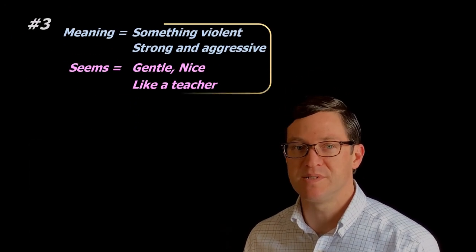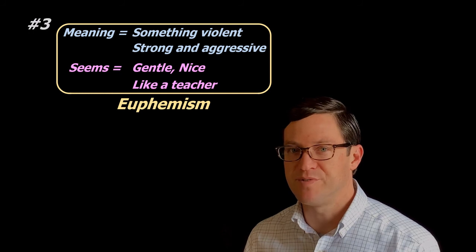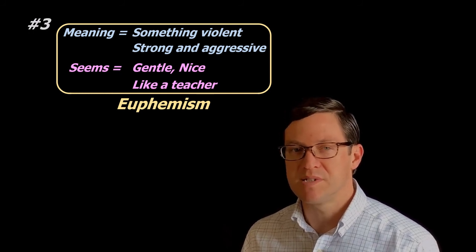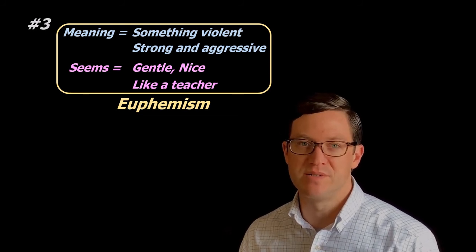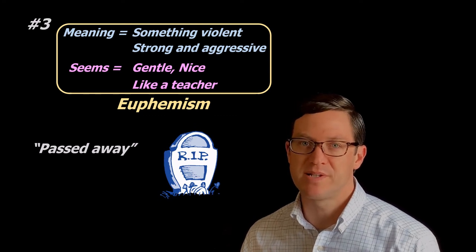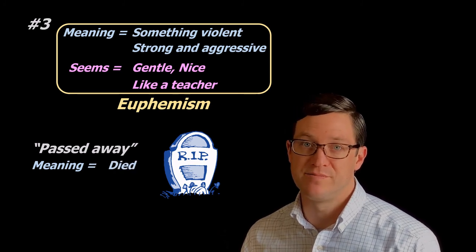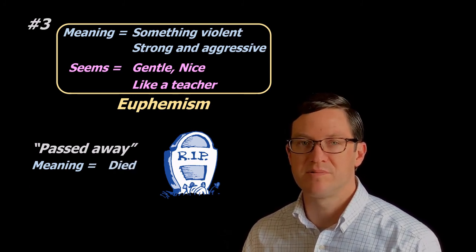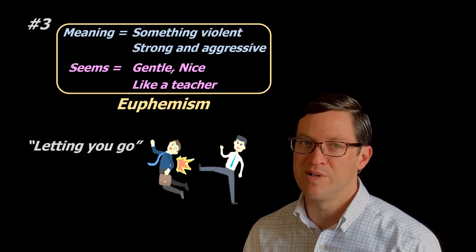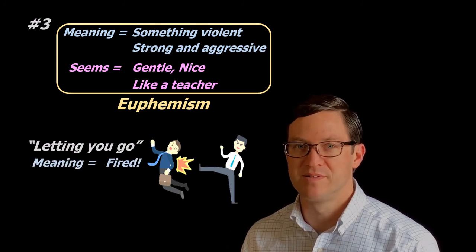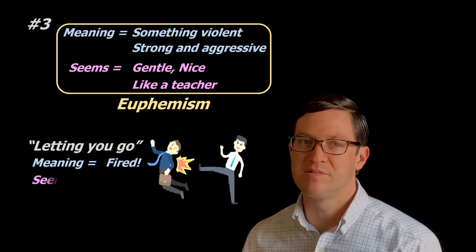A euphemism is an expression that sounds gentle and nice, but the real meaning is shocking, fierce, or controversial. We sometimes use soft words when we want to say something controversial. Another euphemism is passed away. When we say that someone has passed away, it means they died. But die is very strong, and pass away sounds softer. And sometimes bosses say, I'm letting you go. When really they mean, you're fired. Both mean, you can't work at your job anymore, but letting you go is softer.